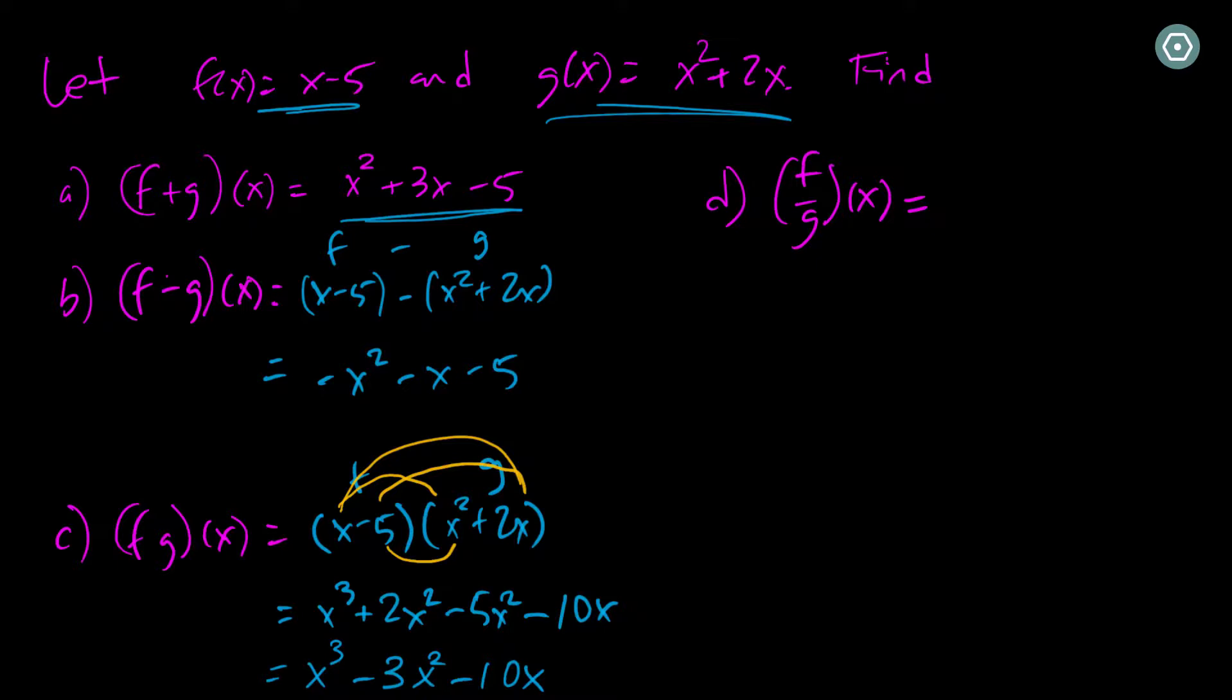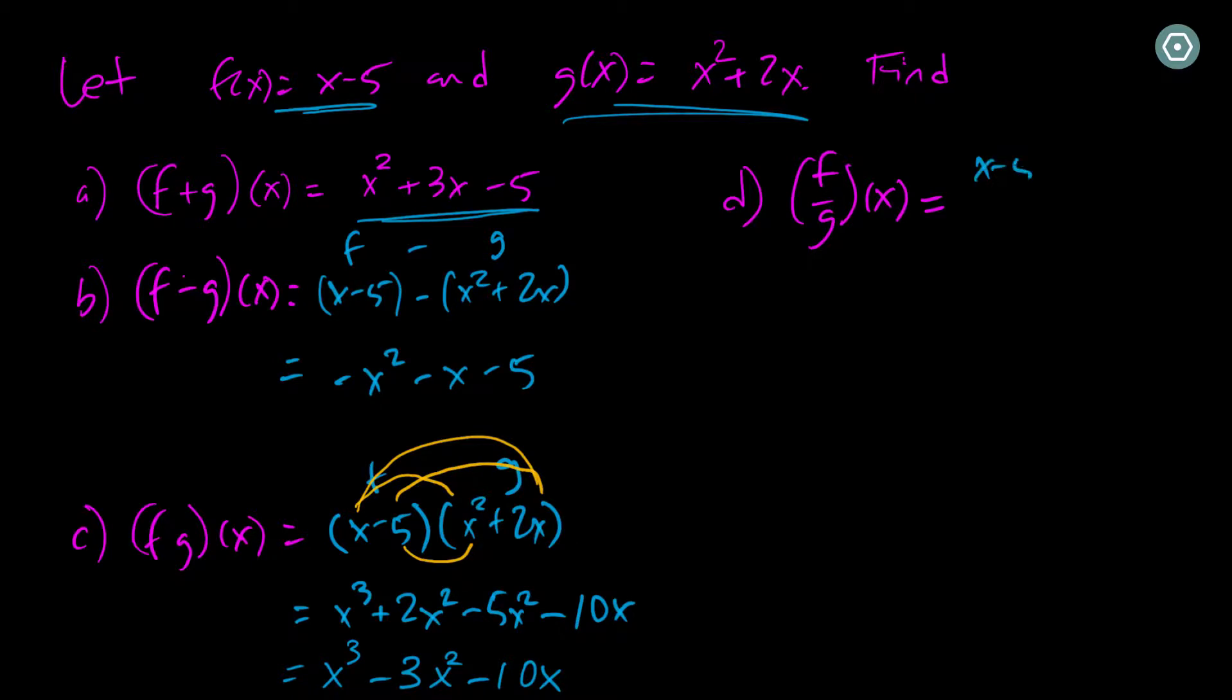Lastly, I just need to say, for part d, f over g of x, I just need to have f divided by g. So that's x minus 5 divided by x squared plus 2x. And the only thing I need to worry about here is that I can't have the denominator here be equal to 0.